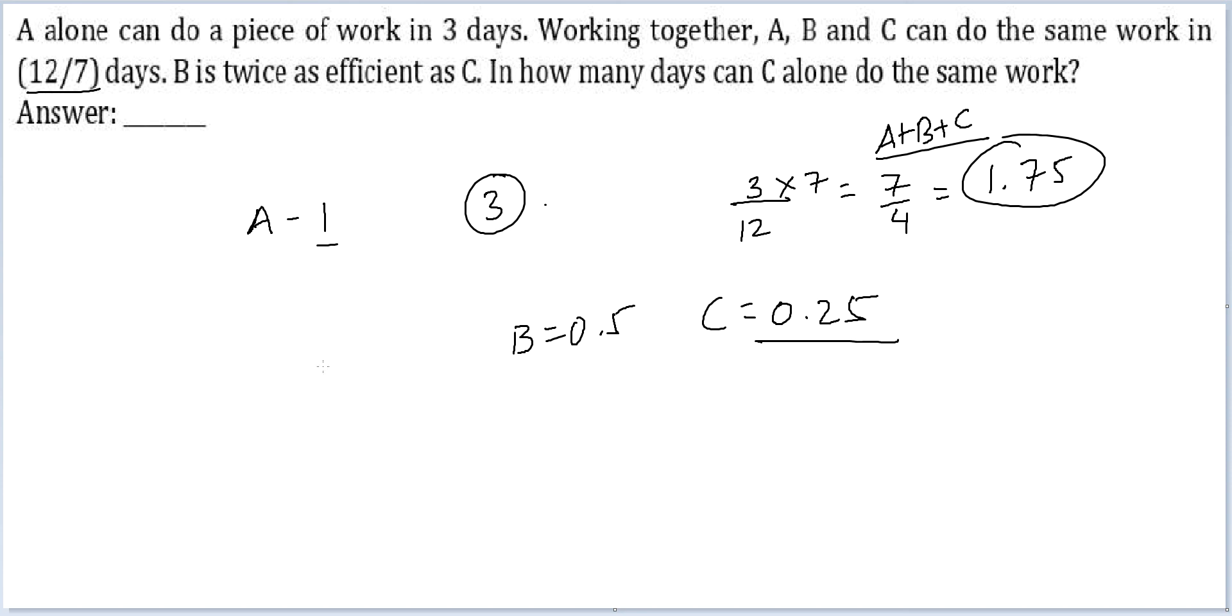In how many days can C alone do the same work? It would be 3 divided by 0.25, or 12 days. In 12 days, C can do the entire work. Answer to the question is 12.